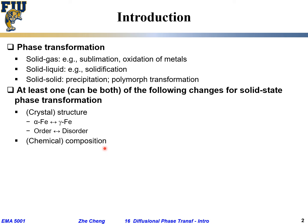Another factor that may change during solid-state phase transformation is composition. To give an example, we'll discuss spinodal decomposition in detail later. This is the case where the crystal structure does not change, but the composition changes locally. So in solid-state phase transformation, either the crystal structure or the chemical composition changes — or both — but at least one of them must change.